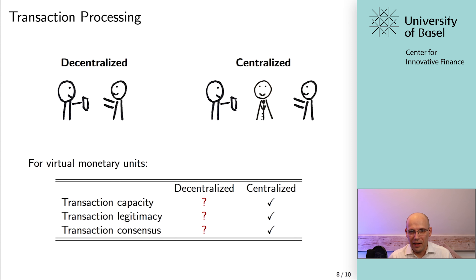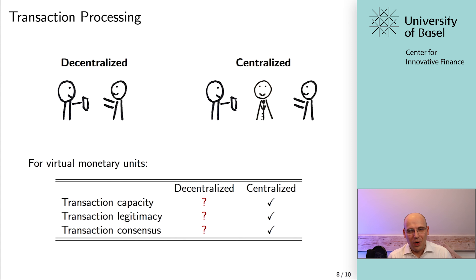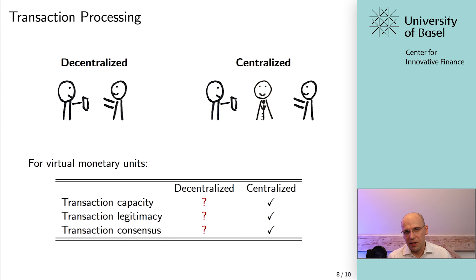With decentralized systems, it's much harder to reach transaction capacity — who do you call, who do you send the payment order to, how do you initiate your payment? It's much harder to verify transaction legitimacy when you just hear it within the network. And it's much harder to establish consensus when there is no single centralized entity with exclusive rights to declare the current state — when everyone has their own copy of the ledger and their own understanding, reaching consensus is much harder. That's why in decentralized networks, it's actually quite hard to solve all three of these properties.